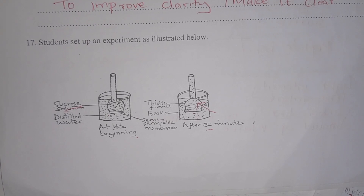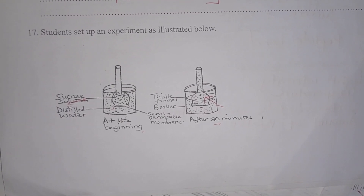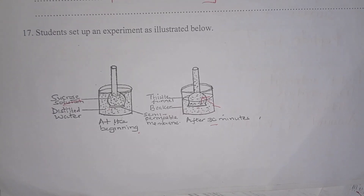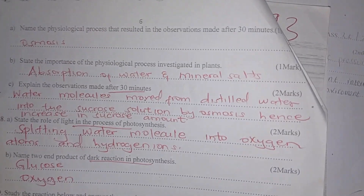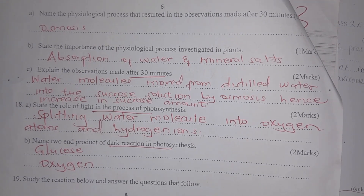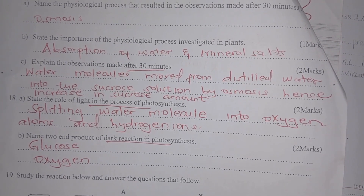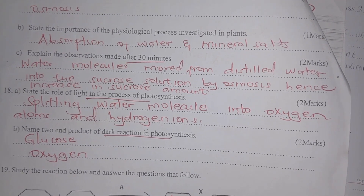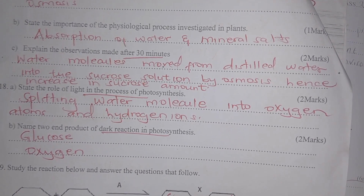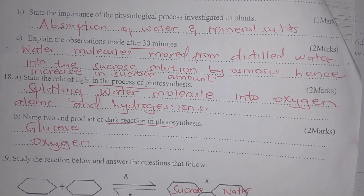A student set up an apparatus with sucrose solution and distilled water. At the 30th minute the sucrose solution level had risen. The physiological process is osmosis. Its importance includes helping in absorption of water and mineral salts. Water molecules moved from a region of high concentration in the distilled water to a region of low concentration in the sucrose solution by osmosis, increasing the amount of solution.